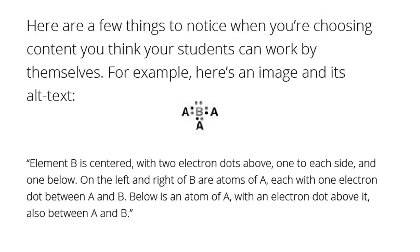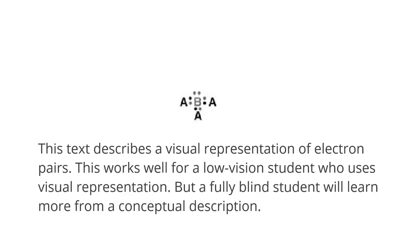Here are a few things to notice when you're choosing content you think your students can work through by themselves. For example, here's an image and its alt text: 'Element B is centered with two electron dots above, one to each side, and one below. On the left and right of B are atoms of A, each with one electron dot between A and B.' This text describes a visual representation of electron pairs. This works well for a low vision student who uses visual representation, but a fully blind student will learn more from a conceptual description.